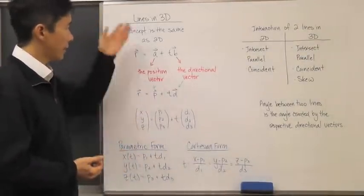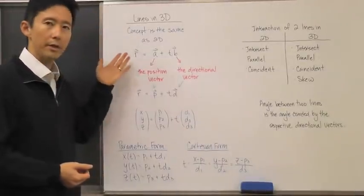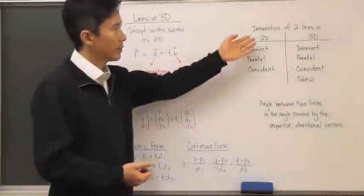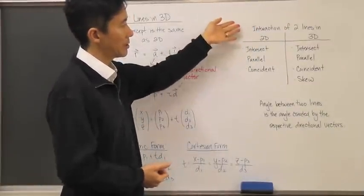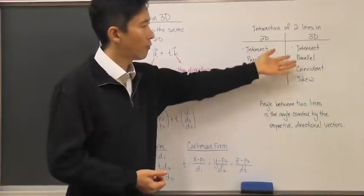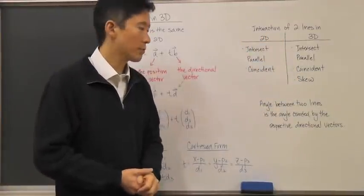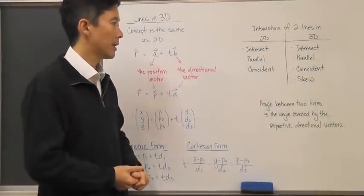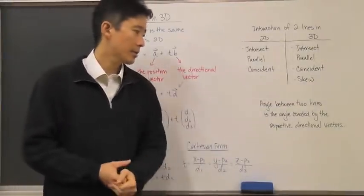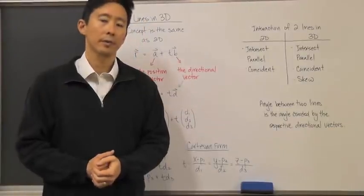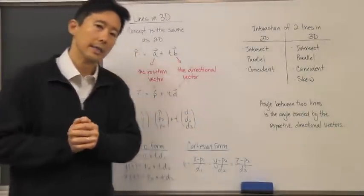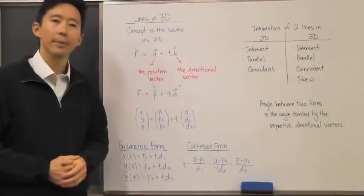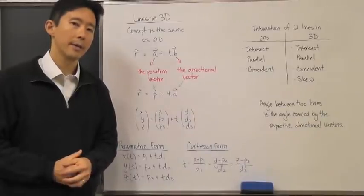To summarize: lines in three dimensions have a vector form, parametric form, and Cartesian form. Two lines can interact in three ways in two-dimensional space, or four ways in three-dimensional space — intersecting, parallel, coincident, or skew. To find the angle between two lines, we look at the angle created by their respective directional vectors. Let's move on to some problems.